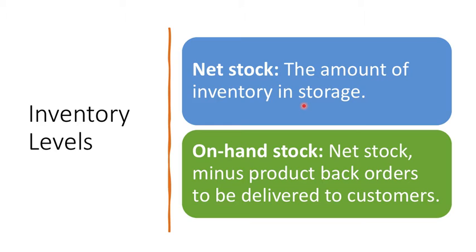Net stock is the amount of inventory in storage — that's the stock you have in your warehouse. A related term is on-hand stock. On-hand stock is net stock minus product backorders.